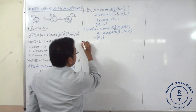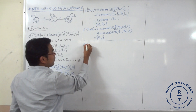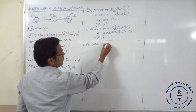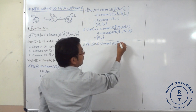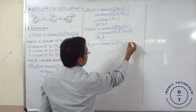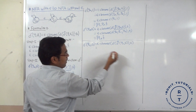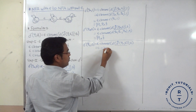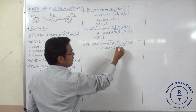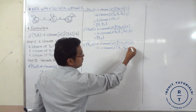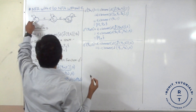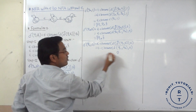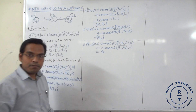Next is for Q1. Delta dash of Q1 with input 0: applying the formula, epsilon closure of delta cap of Q1 with epsilon, then input 0. Epsilon closure of Q1 is {Q1, Q2}. We compute delta(Q1, 0) and delta(Q2, 0) with input 0 — both give phi. So epsilon closure of phi is nothing but phi, and that is why the result here is phi.